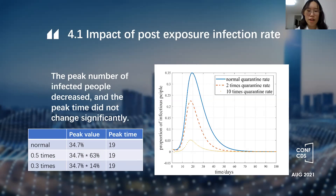We then change the quarantine rate and simulate the change in the number of infected people. When the quarantine rate is 2 times, the peak value is about 63% of the normal quarantine rate peak value. When the quarantine rate is 10 times, the peak value is about 14% of the normal quarantine rate peak value. This shows that increasing the proportion of quarantine can quickly control the development of the epidemic from the root. Therefore, quarantine of the infected and the susceptible could effectively prevent the spread of COVID-19, freeing pressure on medical resources and buying time for vaccine development.